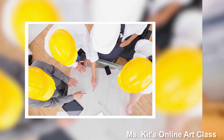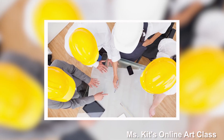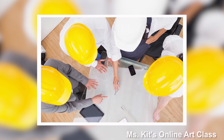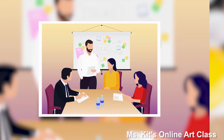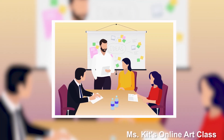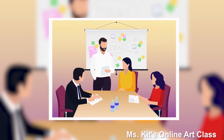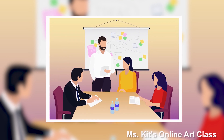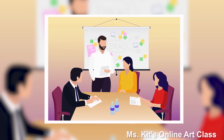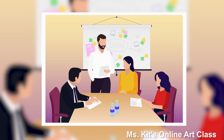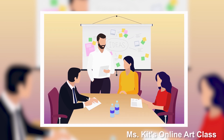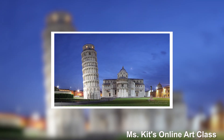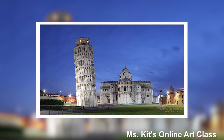Among these iconic buildings, there is one that almost failed, but because of the collaboration of great architects, they were able to come up with a solution to stop the building from collapsing. And this is the Tower of Pisa in Italy.